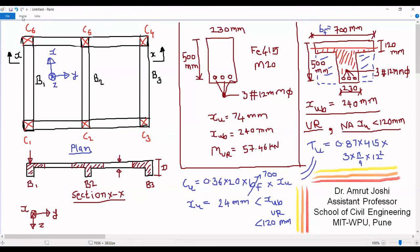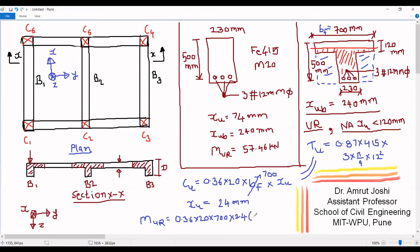Now let us compute the moment of resistance of this section. The moment of resistance Mur equals the magnitude of Cu or Tu multiplied by the lever arm. So Mur = 0.36 × Fck × BF × XU × (D − 0.42 × XU) = 0.36 × Fck × 700 × 24 × (500 − 0.42 × 24). So Mur turns out to be 59.16 kNm.